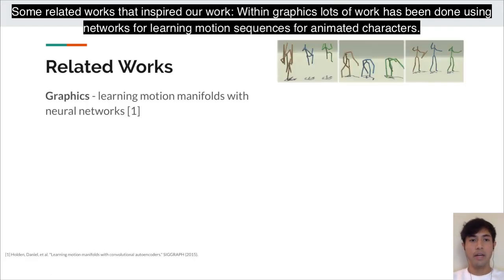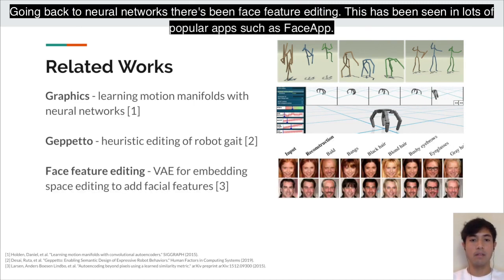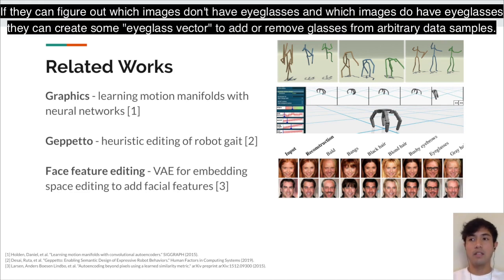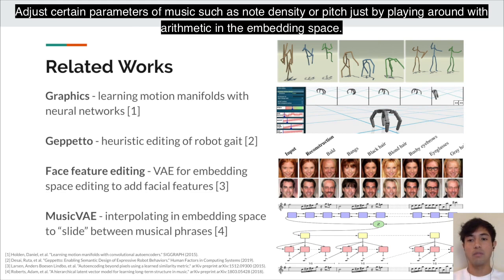Some related works that inspired our work: within graphics, lots of work has been done using neural networks for learning motion sequences for animated characters. The example I used earlier was a project called Geppetto, where robot gait parameters were edited for a four-legged walking robot. In neural network face feature editing, seen in apps like FaceApp, a VAE trained on face images can target specific features — for example, eyeglasses — by finding a vector to add or remove them from arbitrary samples. That approach was also used for Music VAE, where similar arithmetic in the embedding space adjusts parameters like note density or pitch.